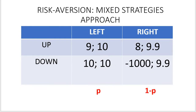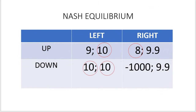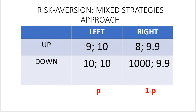However, the problem described above is a bit simplified, as it was solved under pure strategies. If we allow for mixing — letting the column player choose left with probability p and right with probability 1 minus p — we introduce strategic uncertainty and can analyze whether choosing up is indeed a rational option for the row player.